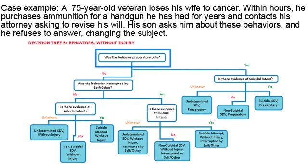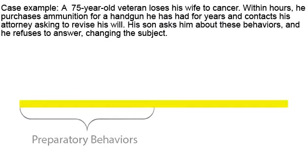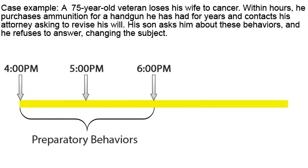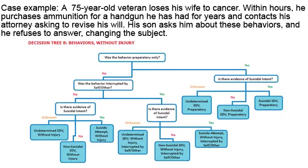Was the behavior preparatory only? Let's review the key concept of preparatory behavior. Preparatory behaviors are acts or preparations towards engaging in self-directed violence, but before the potential for injury has begun. This can include anything beyond a verbalization or a thought, such as assembling a method like buying a gun or collecting pills, or preparing for one's death by writing a note or giving things away. In this case, the veteran purchased ammunition for the handgun and contacted his attorney — these are the preparatory behaviors. Back to decision tree B: was the behavior preparatory only? Yes.